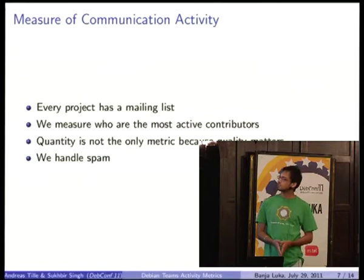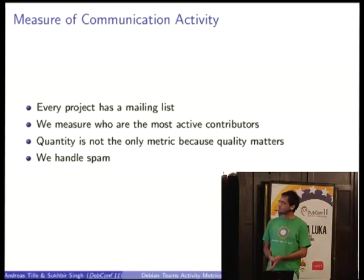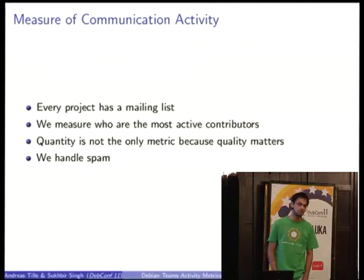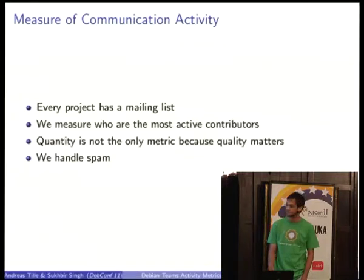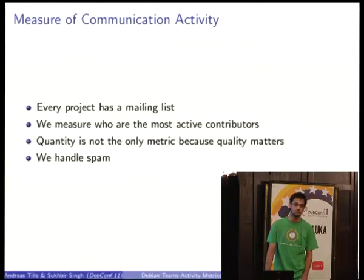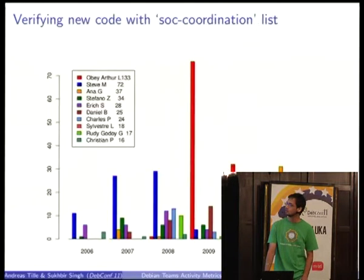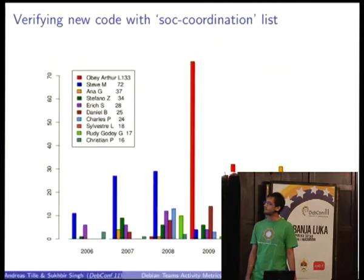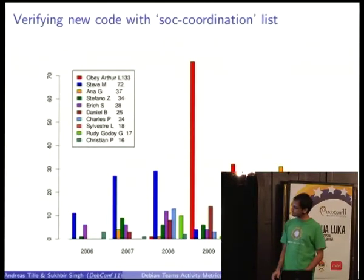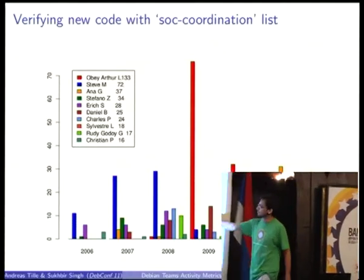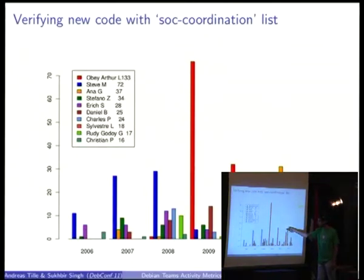Every project has a mailing list. We measure who are the most active contributors. Quantity is not the only metric because quality of communication also matters — if you're talking too much and it's not substantial, it doesn't count much. We handle spam, so in the final result we automatically remove spam and just get a list of the top contributors. Since I'm a Summer of Code student, we used the SOC coordination mailing list as test data. As you can see, Obi Arthur is at the top overall, but it varies — in 2010 Stefano was contributing the most, in 2011 it was Anna.